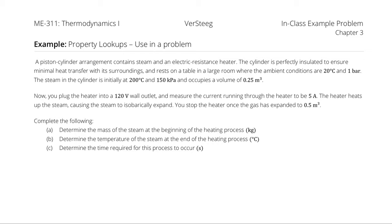A piston cylinder arrangement contains steam and an electric resistance heater. The cylinder is perfectly insulated to ensure minimal heat transfer with its surroundings and rests on a table in a large room where the ambient conditions are 20 degrees Celsius and 1 bar. The steam is initially at 200 degrees Celsius and 150 kilopascals and occupies a volume of 0.25 cubic meters. You plug the heater into a 120 volt wall outlet and measure the current to be 5 amps. The heater heats the steam causing it to isobarically expand until the gas has expanded to 0.5 cubic meters.